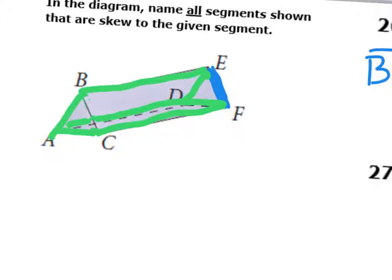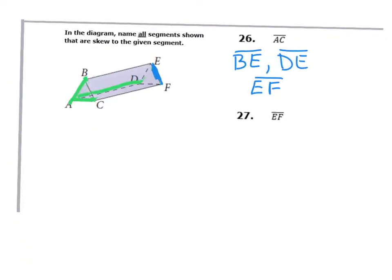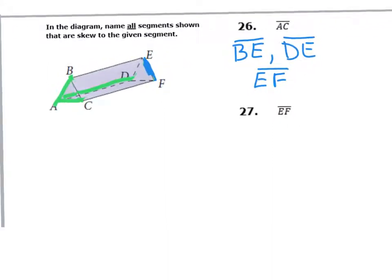Then remove anything touching at E, and anything touching at F. The ones that are left are the skew segments, which are AB, AC, and AD.